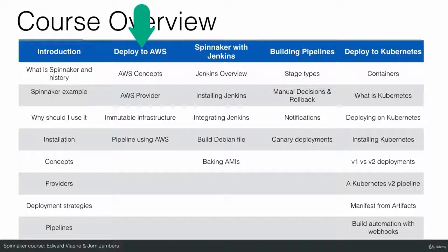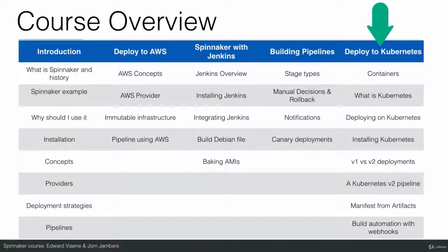Then we can really start deploying an application ourselves — first on AWS, where we'll show you how to create a pipeline using AWS and how to integrate it with Jenkins. I'll explain how to build pipelines in Spinnaker to do different kinds of deployments. And then there's a big topic on deploying to Kubernetes using Spinnaker.